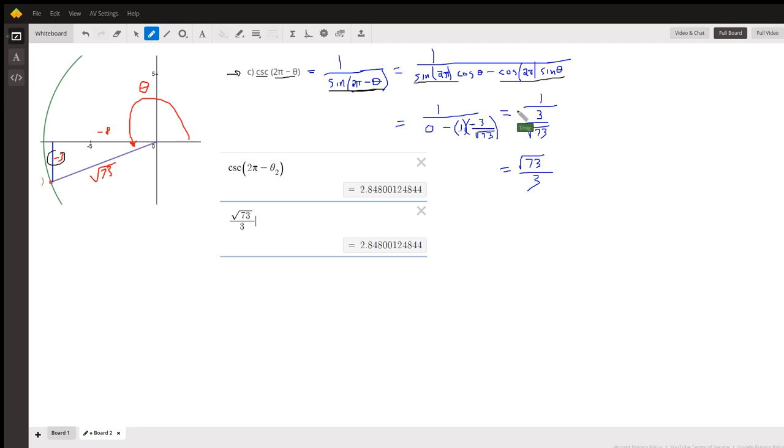And finally, multiply by the reciprocal of the denominator. There it is right there - that's the cosecant of 2π minus theta. And here's proof.